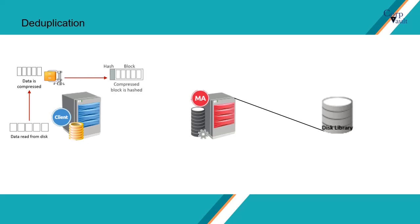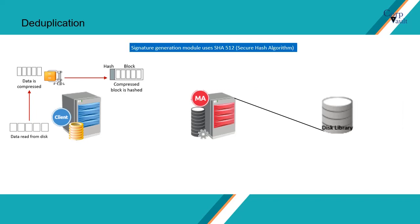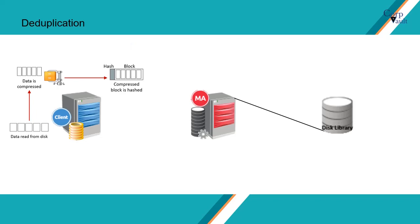The compressed block is then hashed. Hashing is an algorithm to compare data — it is a unique signature given to the block by the signature generation module. The signature generation module uses Secure Hash Algorithm SHA-512, along with the size of the data, to generate unique signatures for blocks. This combination eliminates the possibility of collisions, where two blocks hash to the same value.